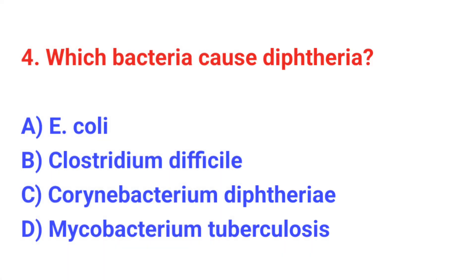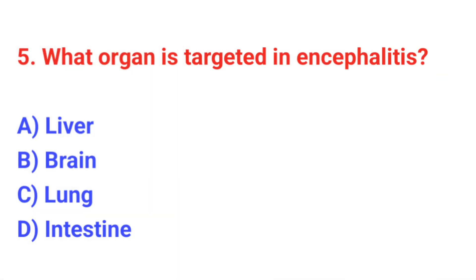Question number 4: Which bacteria cause diphtheria? The correct answer is C: Corynebacterium diphtheriae. Question number 5: What organ is targeted in encephalitis? The correct answer is B: Brain.